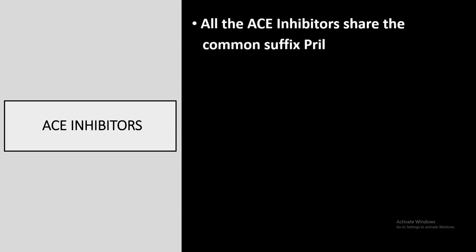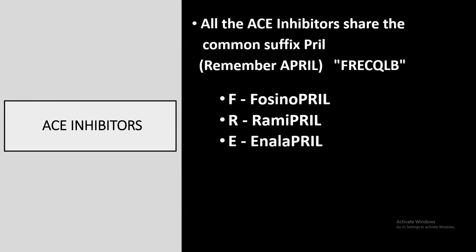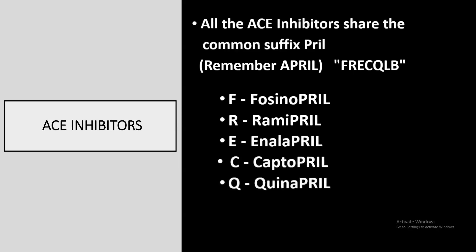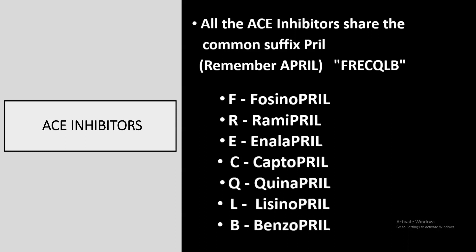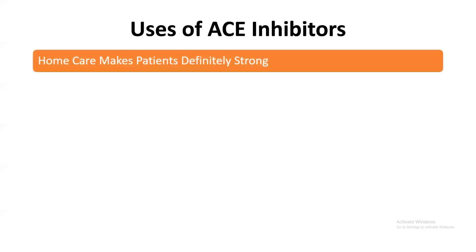ACE inhibitors all share the common suffix '-pril' — remember April. We can remember them with the mnemonic FRECKLE B: F for fosinopril, R for ramipril, E for enalapril, C for captopril, K for quinapril, L for lisinopril, and B for benazepril.